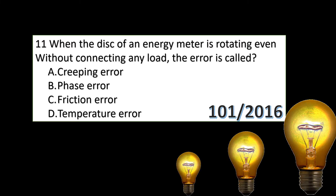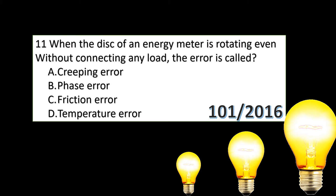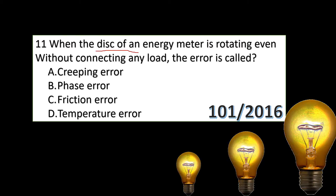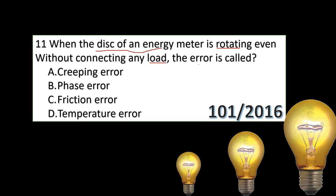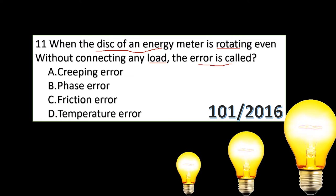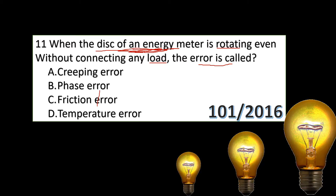When the disk of an energy meter is rotating even without connecting any load, the error is called — options are: creeping error, phase error, friction error, temperature error.